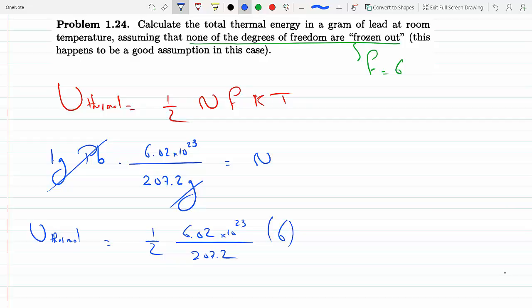k is 1.381 times 10 to the minus 23, this is joules per Kelvin, and the temperature they said is room temperature, about 290 or 300.